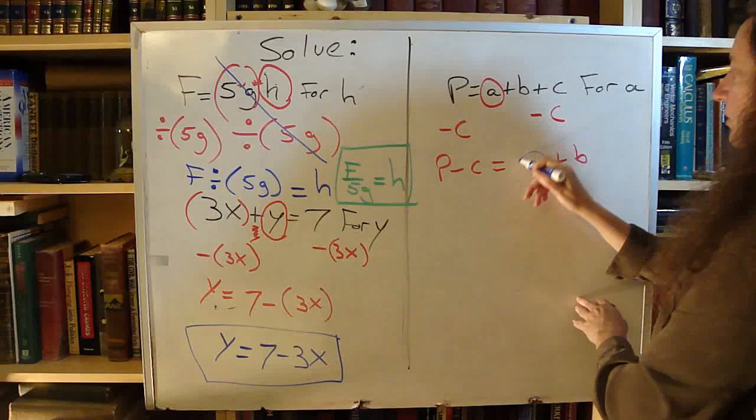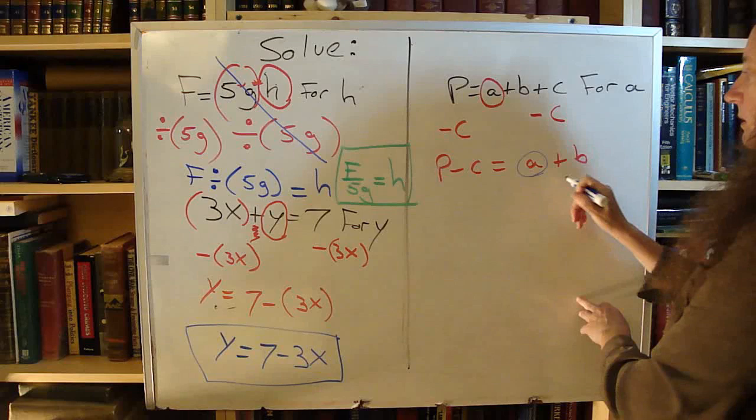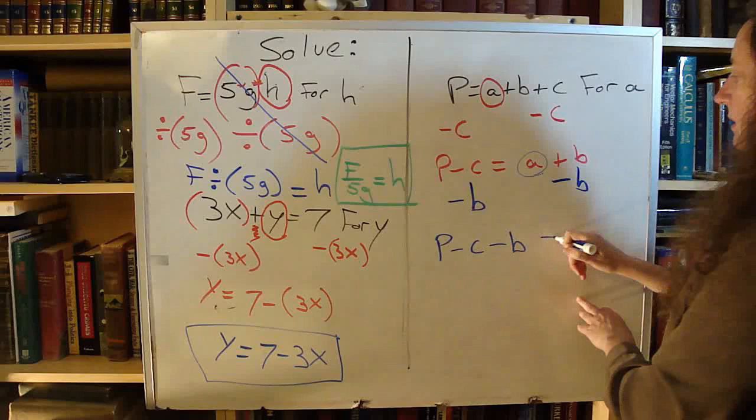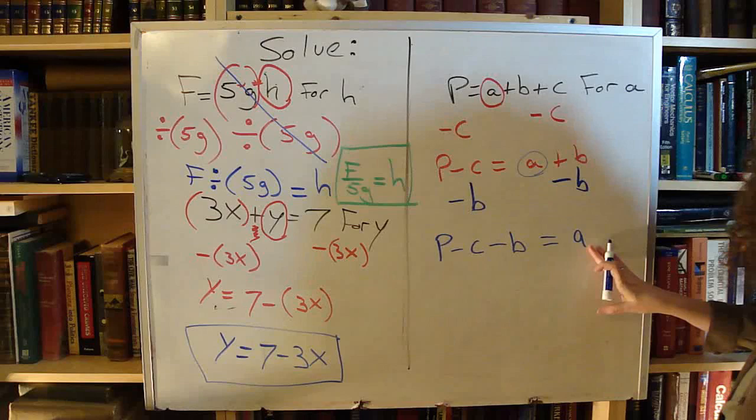A is not alone yet. Still trying to solve for A. I need to get rid of this B. It is being added so I am going to subtract it. So now I have P minus C minus B equals A.